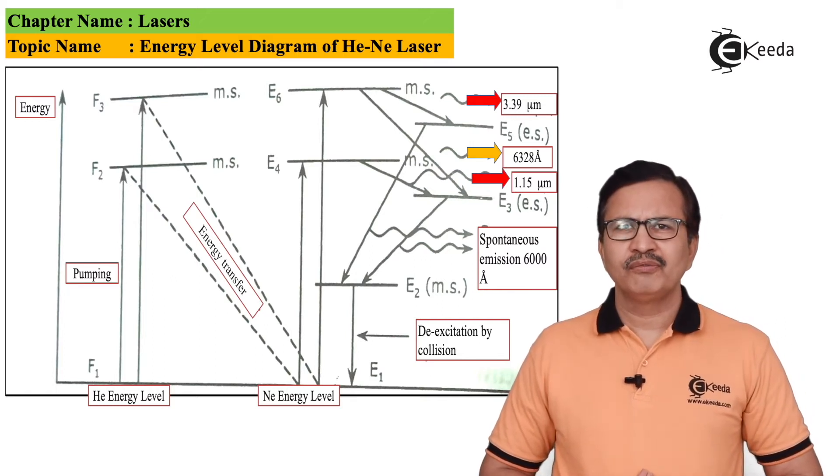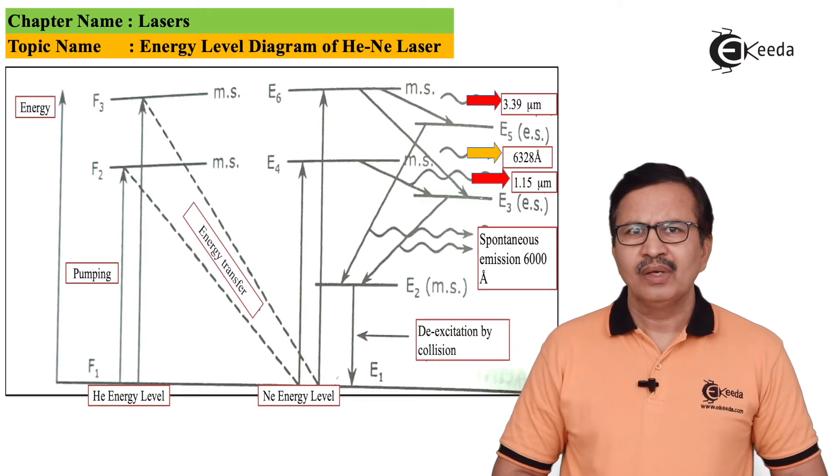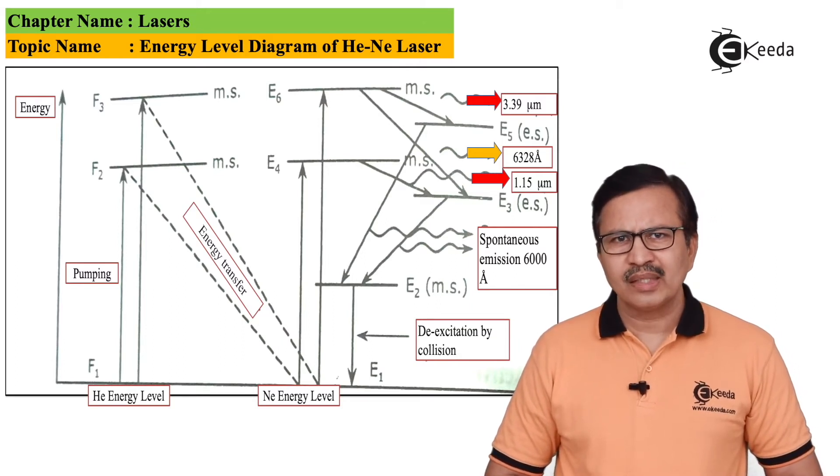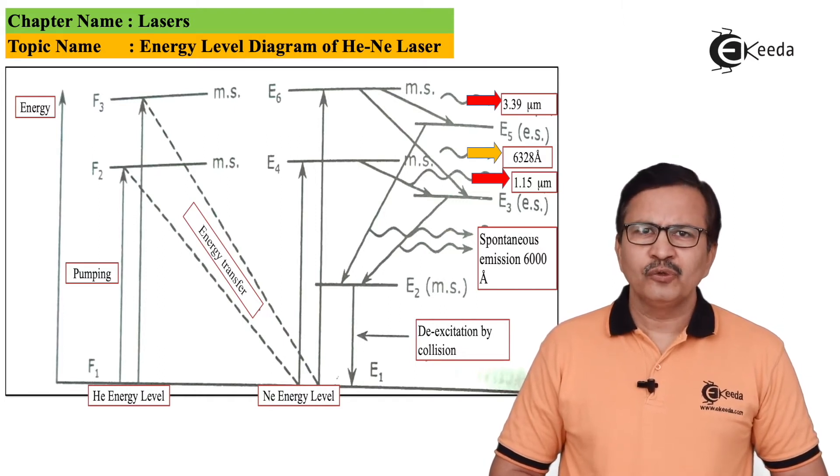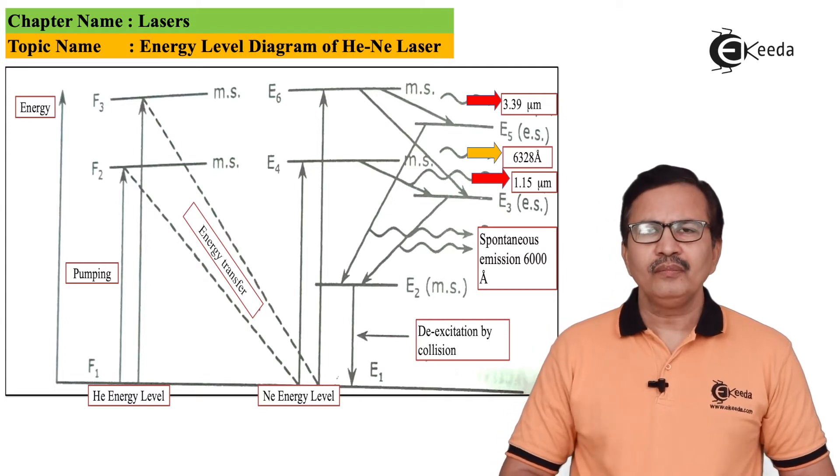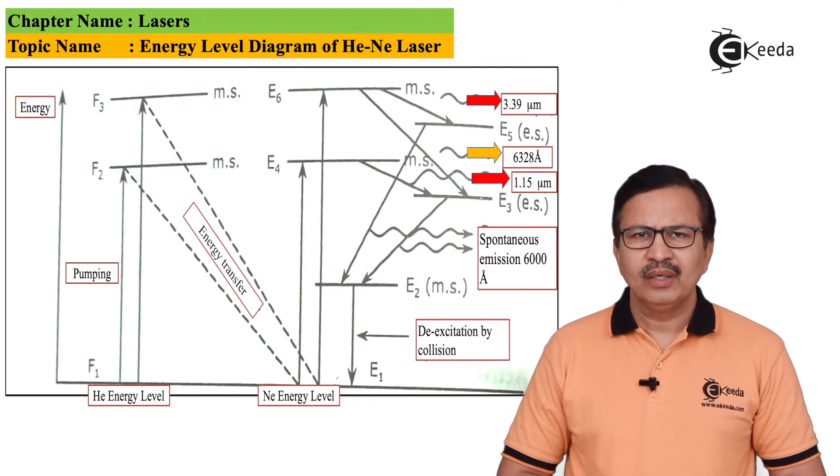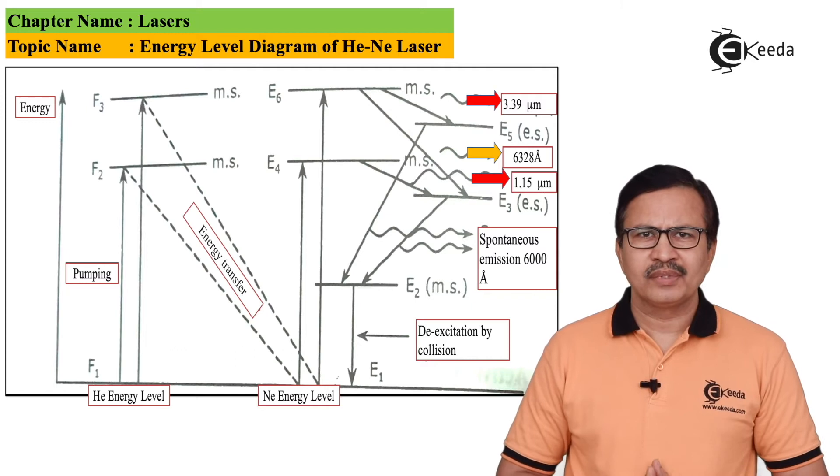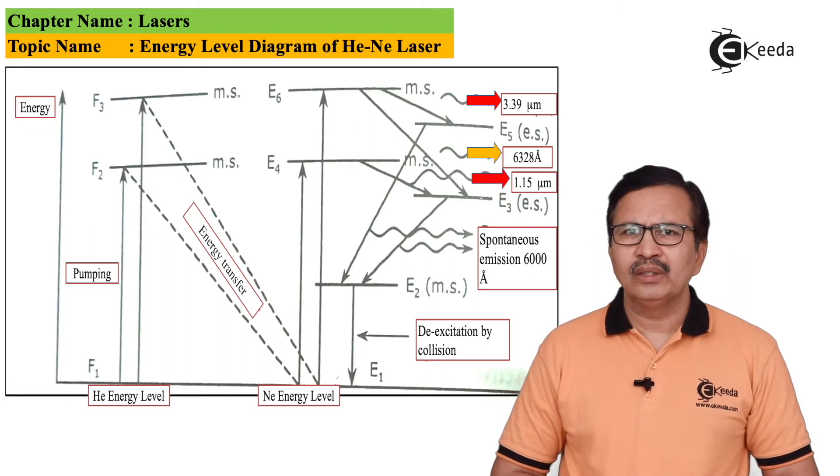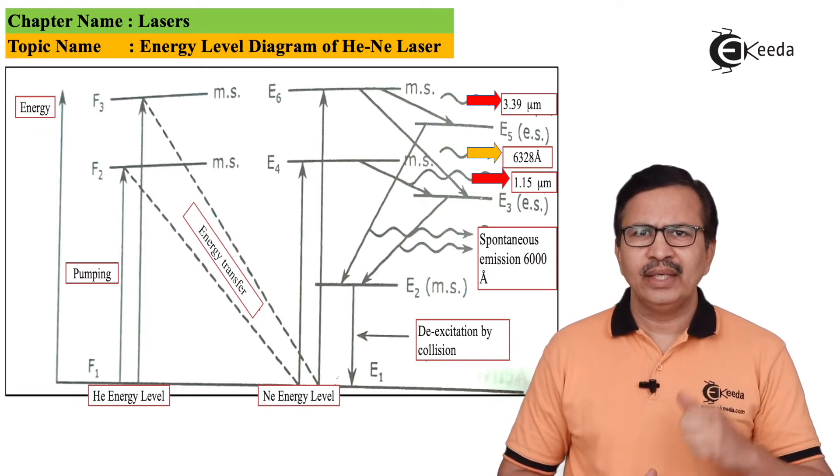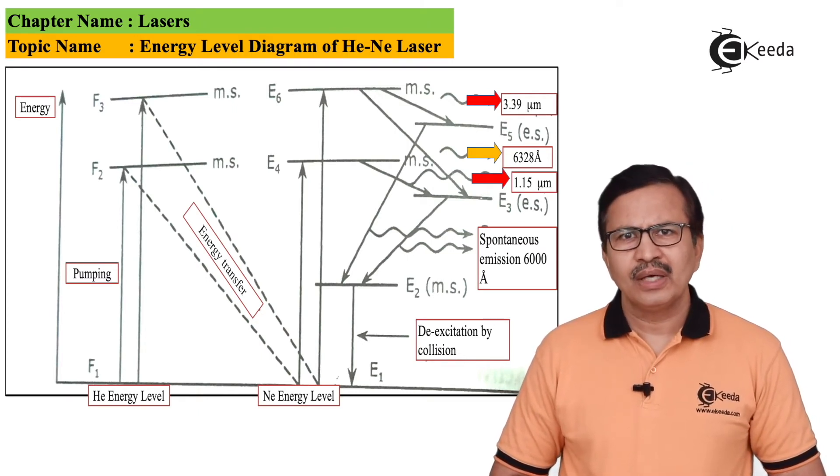By a rare coincidence of nature, the energy levels F2 and F3 of helium are actually coincident with the metastable states of neon E4 and E6 respectively. Upon collision with neon atoms, helium atoms give their energy to the neon atoms and return to the ground state. Neon atoms take this energy and achieve the excited states E4 and E6.